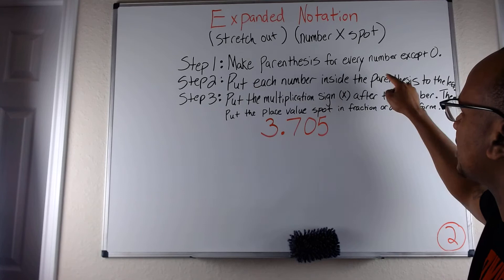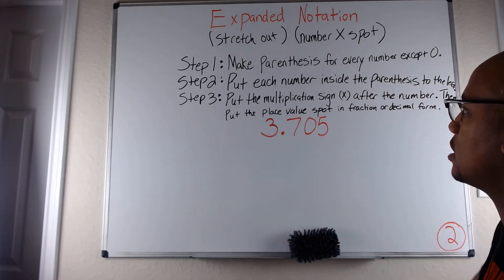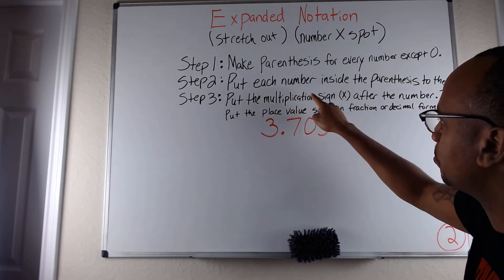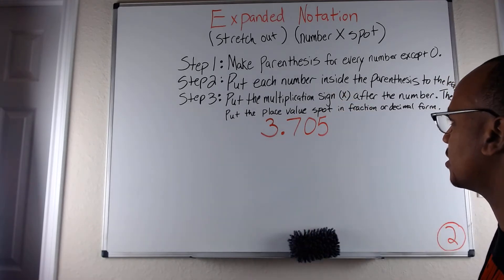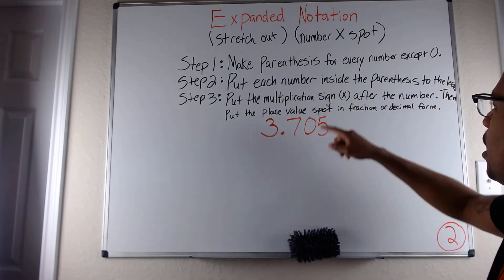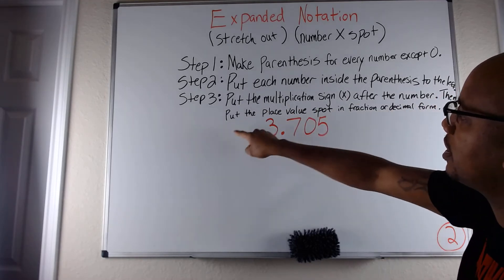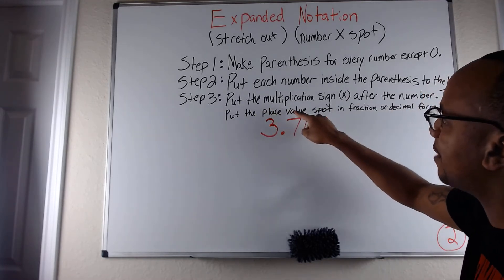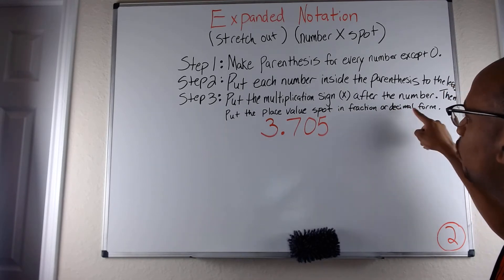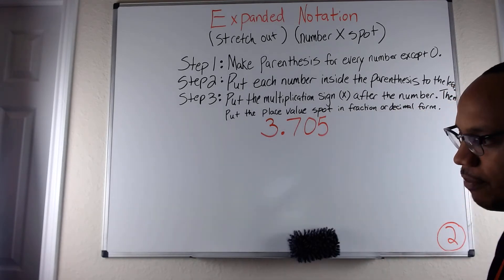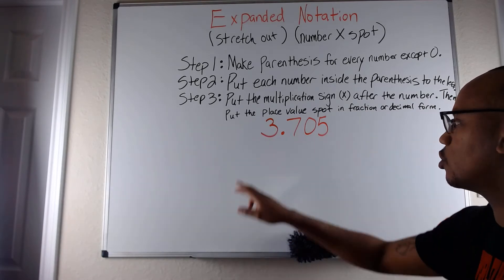Step two — put each number inside the parentheses to the left. Step three — put the multiplication sign, which will be an x in this example, after the number, then put the place value spot in fraction or decimal form.